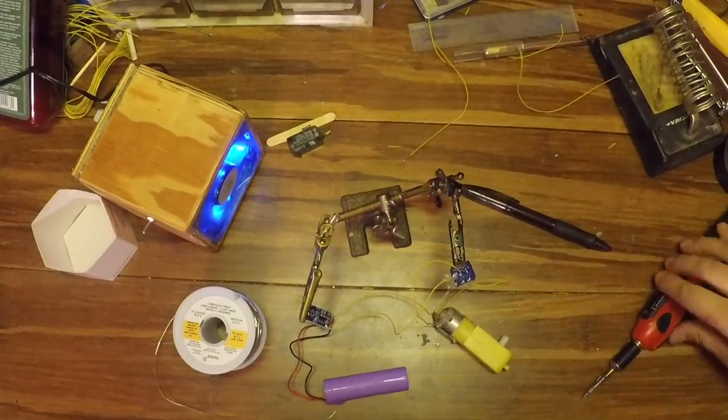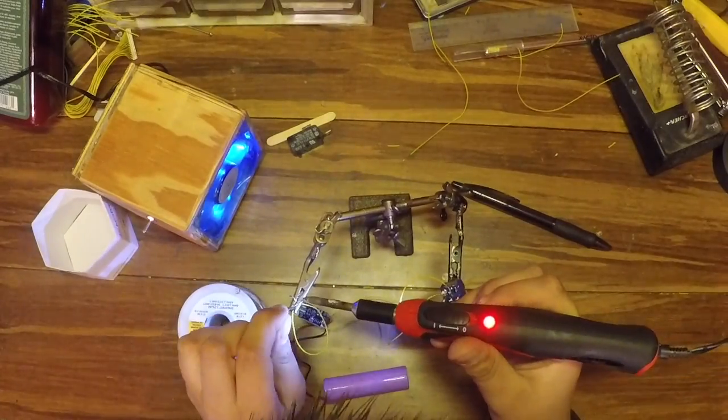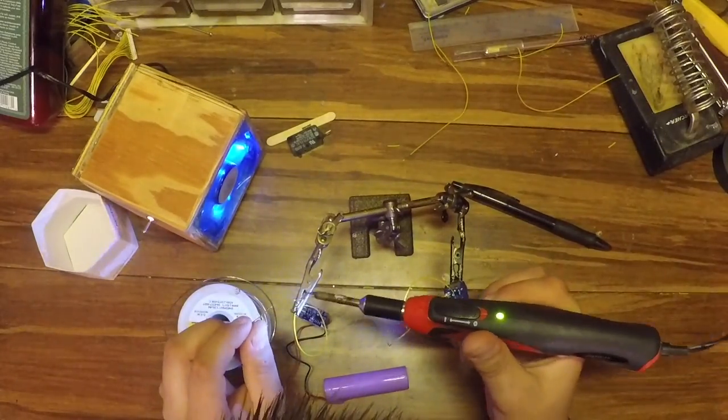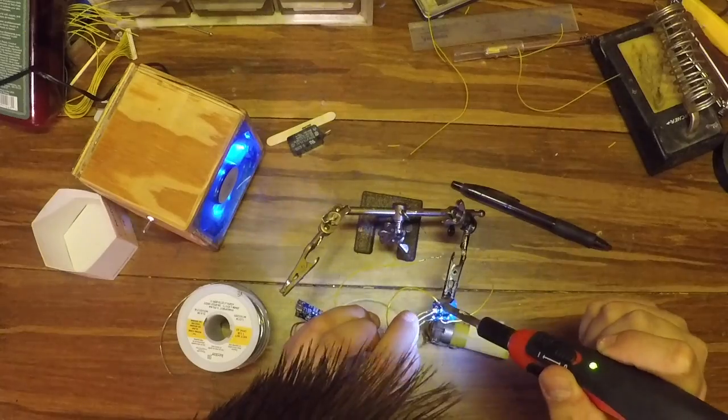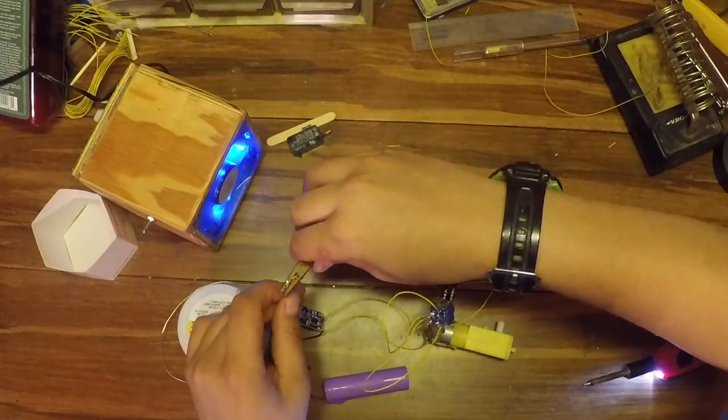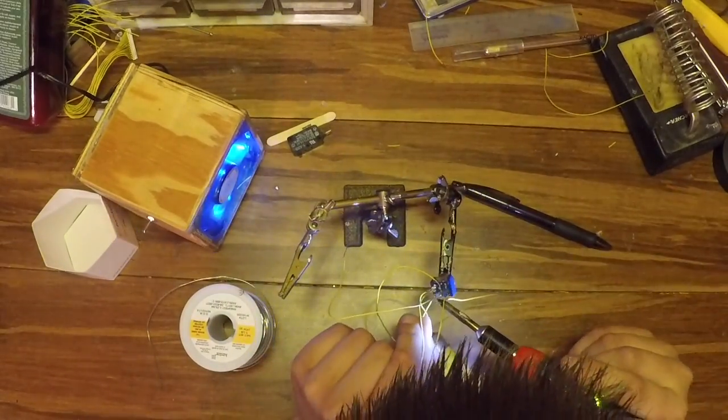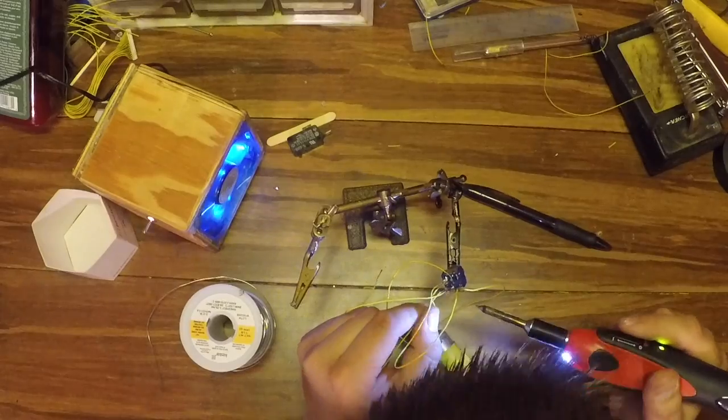So next you're going to want to solder a pigtail from pin one and pin six. So basically it's just a loop, it doesn't even do anything, it just connects pin one and six together. So it's a closed circuit right there.